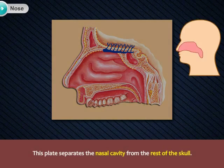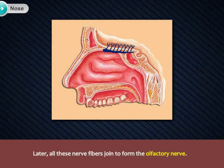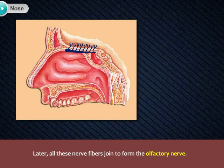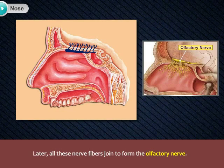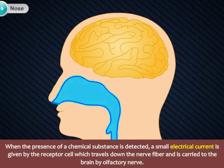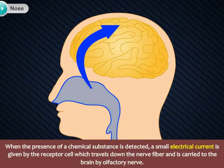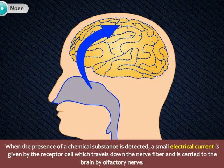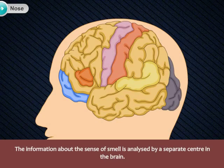This plate separates the nasal cavity from the rest of the skull. All these nerve fibres join together to form the olfactory nerve. When the presence of a chemical substance is detected, a small electrical current is generated by the receptor cell, which travels down the nerve fibre and is carried to the brain by the olfactory nerve. The information about the sense of smell is analysed by a separate centre in the brain.